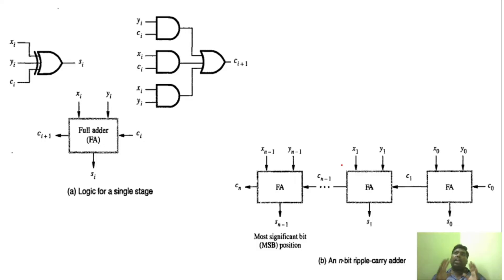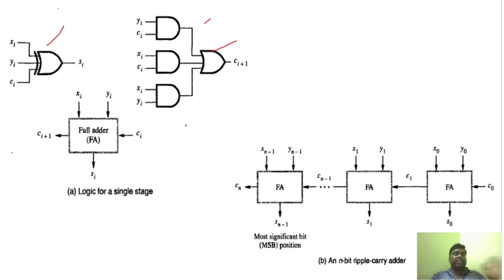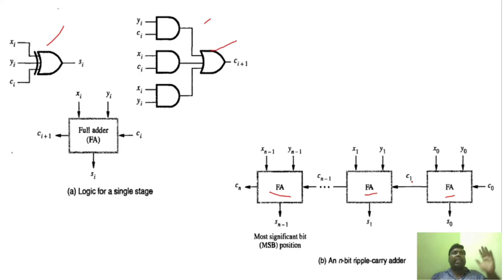Normally, ripple carry adder does not have a separate design. As I said, it is the design of full adder. Depending upon the number of bits, we can add the number of full adders. For example, the full adder design can be implemented using XOR gates, AND gates, and OR gates. For an n-bit ripple carry adder, if it is 4 bits you add 4 full adders, if it is 3 bits you add 3 full adders. For n bits, you add n full adders. The operation is the same as that of the full adder.